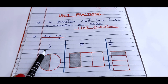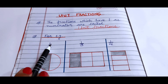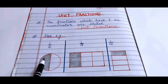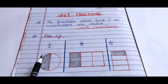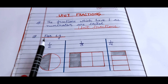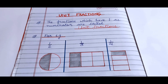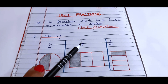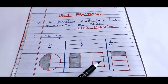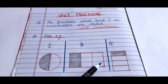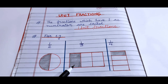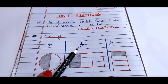1 by 2 means 1 part is shaded out of 2 parts. There is a circle divided into 2 equal parts, so total number of parts is 2 and the shaded portion is only 1 — so 1 out of 2, or 1 by 2. Similarly, this rectangle is divided into 3 equal parts, total parts is 3, and only 1 is shaded, so 1 out of 3 are shaded.